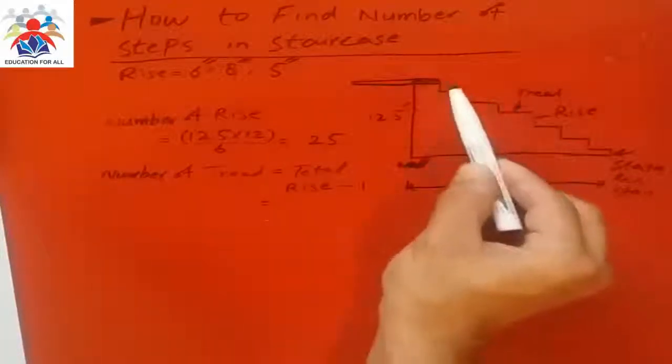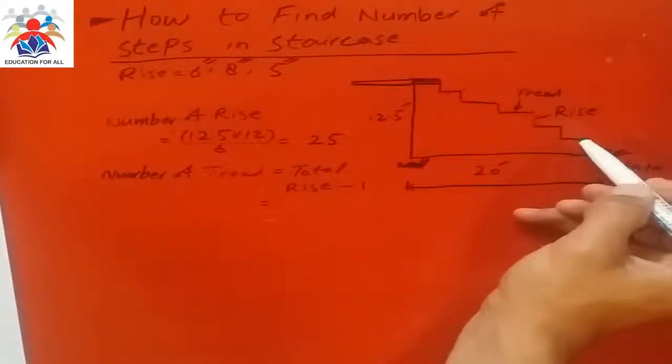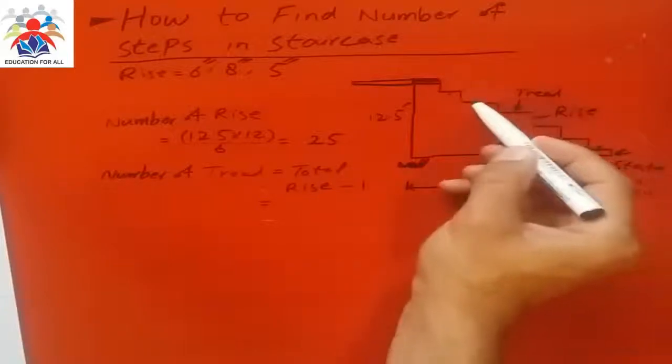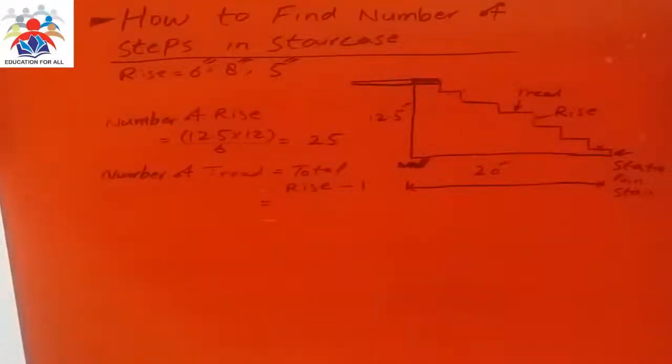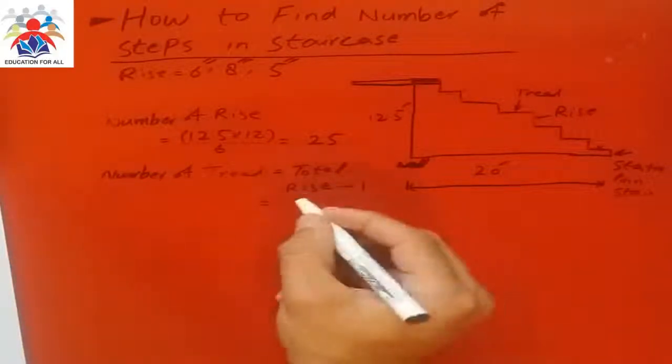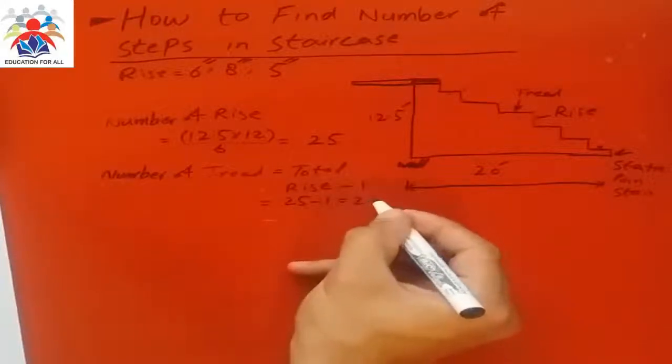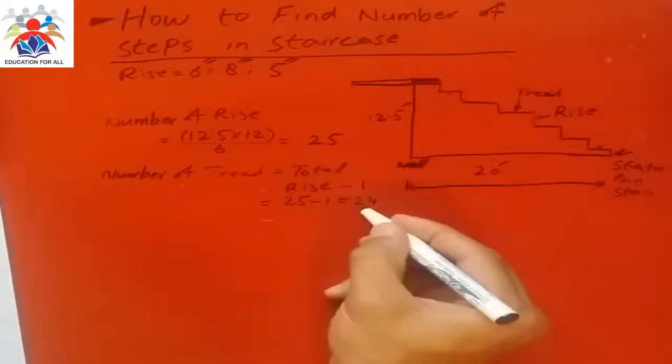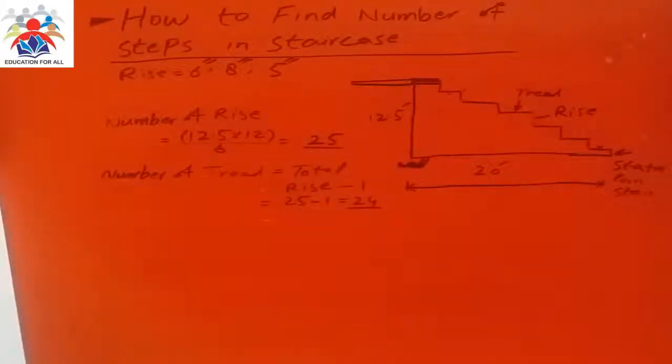You don't need to count this one. So you have to count from here: one, two, three, four, and five. The sixth one is our floor slab. So the tread would be 25 minus 1, which is equal to 24. So we have 24 treads and 25 steps.